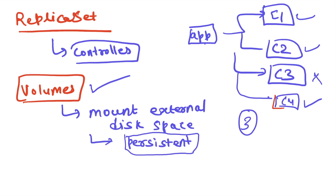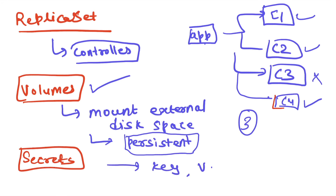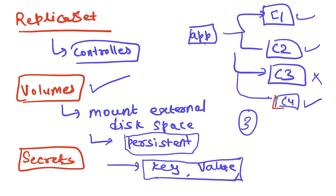Another concept is secrets. Secrets are key-value configurations that let you store sensitive information your app needs — for example, database credentials or API secrets used internally by your application. You store these at the Kubernetes level, and these secrets are made available to your containers, which can access them through a key-value store.